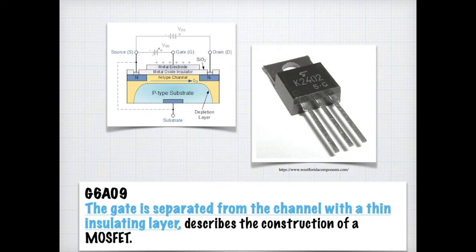For the exam, you need to know what describes the construction of a MOSFET. If you can see by the little diagram, there's a little metal oxide insulator that's between the channel and the metal electrode. So for the exam, you need to know that the gate is separated from the channel with a thin insulating layer. And that's what describes the construction of a MOSFET. MOSFET, by the way, stands for a metal oxide semiconductor field effect transistor.